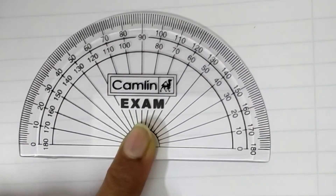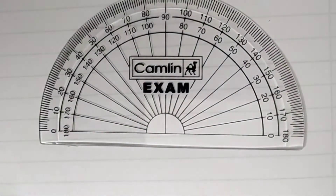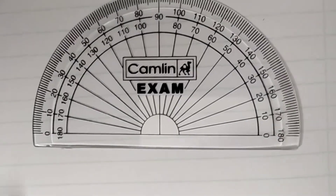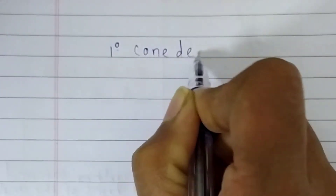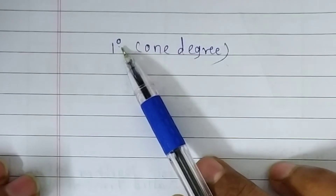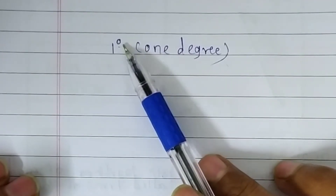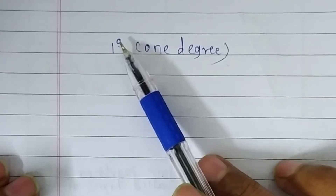Each part is one degree, and one degree is written with the degree sign. This is the sign of degree — it's one degree. From now on, we are going to write this sign for degree in questions based on angles.